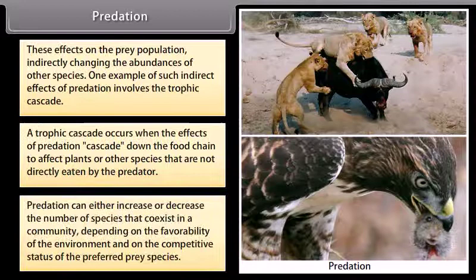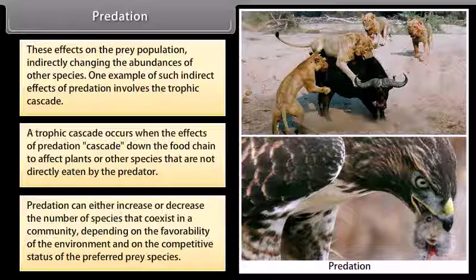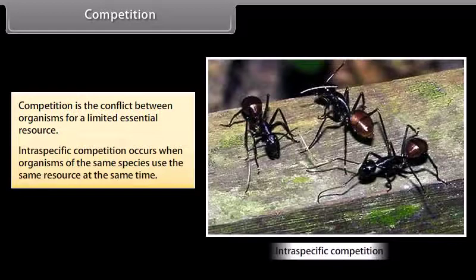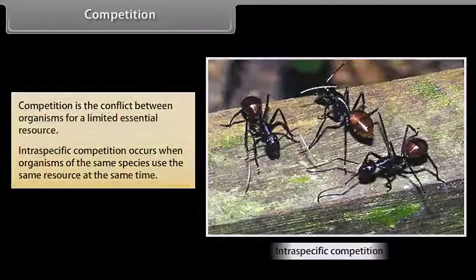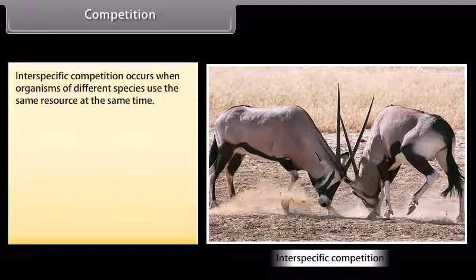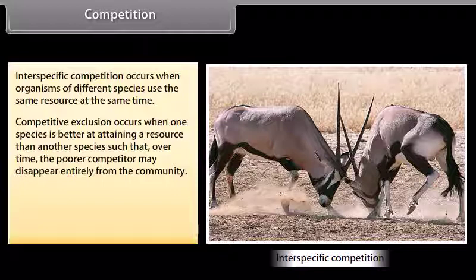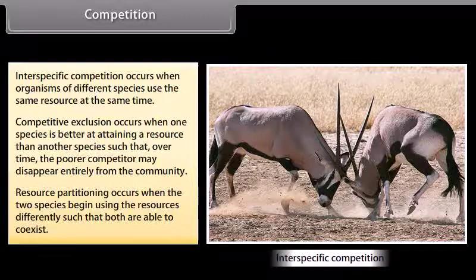Predation can either increase or decrease the number of species that coexist in a community, depending on the favorability of the environment and the competitive status of the preferred prey species. Competition is the conflict between organisms for a limited essential resource. Intraspecific competition occurs when organisms of the same species use the same resource at the same time. Competitive exclusion occurs when one species is better at attaining a resource than another, such that over time the poorer competitor may disappear entirely from the community. Resource partitioning occurs when two species begin using resources differently such that both are able to coexist.